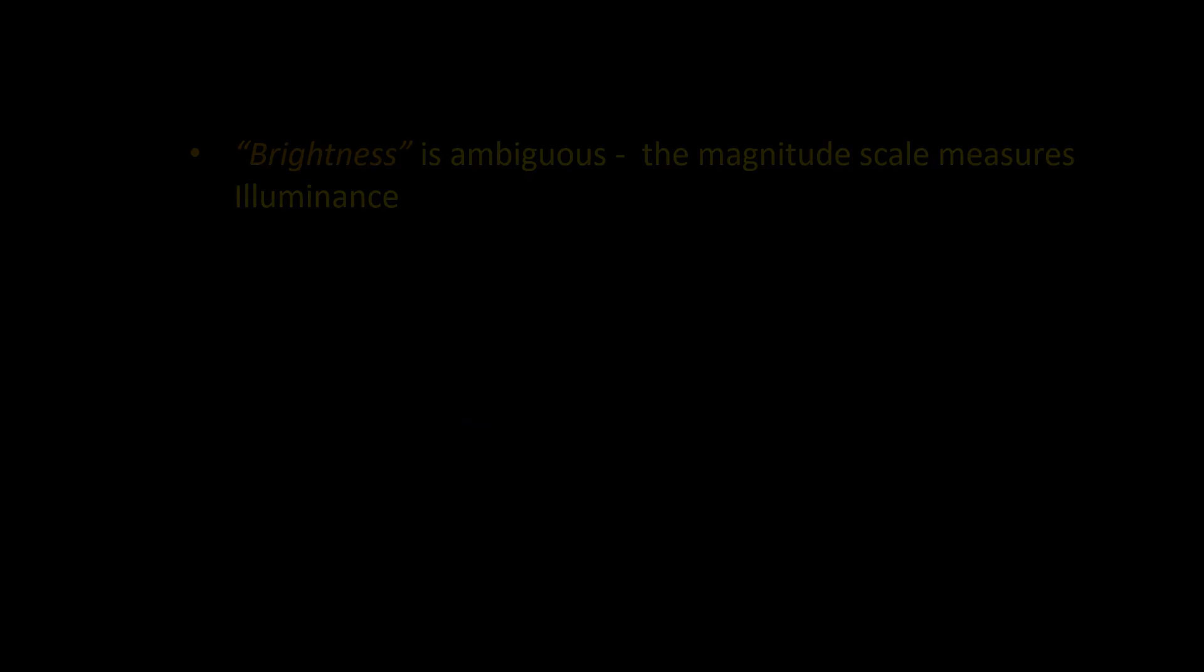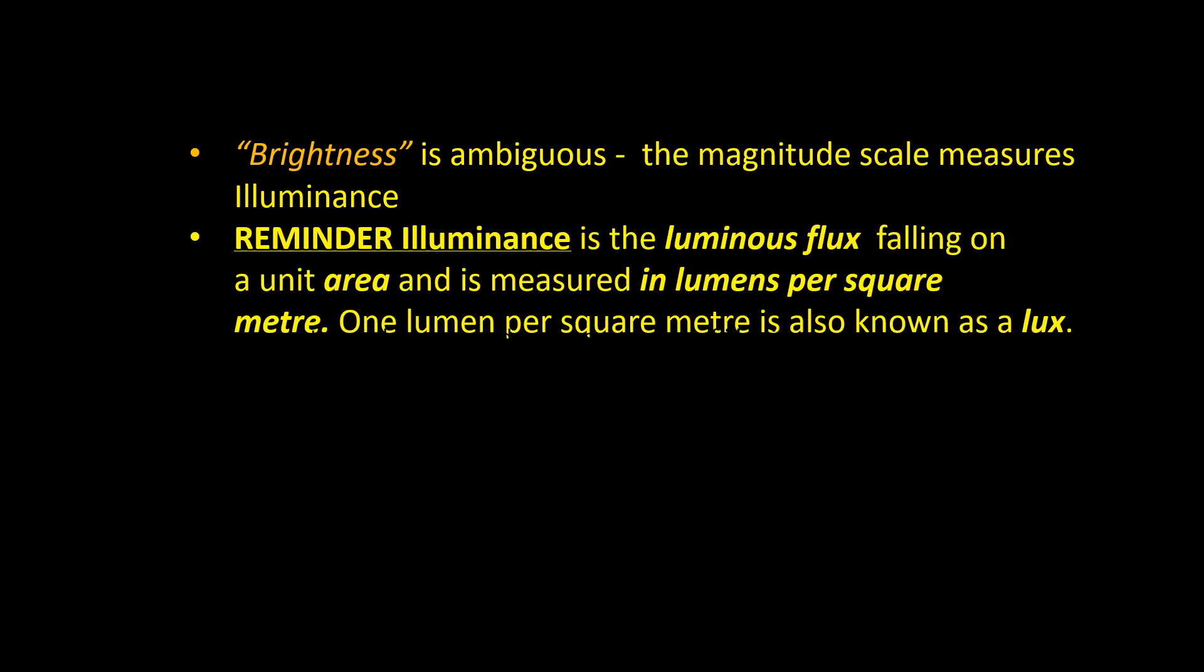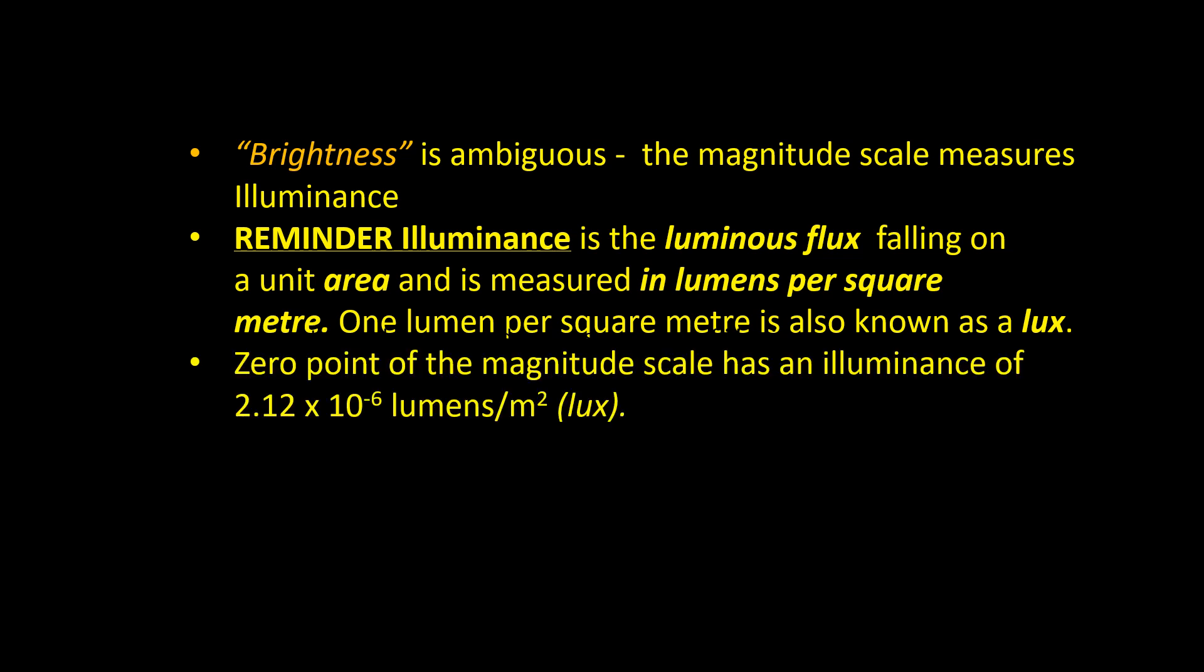Although the term brightness is widely used even in scientific literature, it can be ambiguous. In precise scientific terms, the modern magnitude scale is a measure of illuminance. Rather than being based upon Vega which is a slightly variable star, the zero point has an illuminance of 2.12 times 10 to the minus 6 lux.